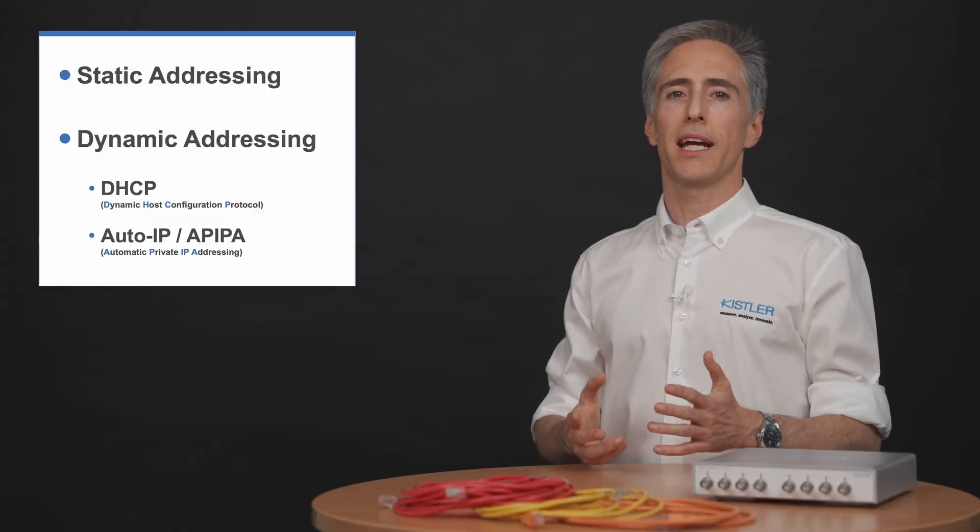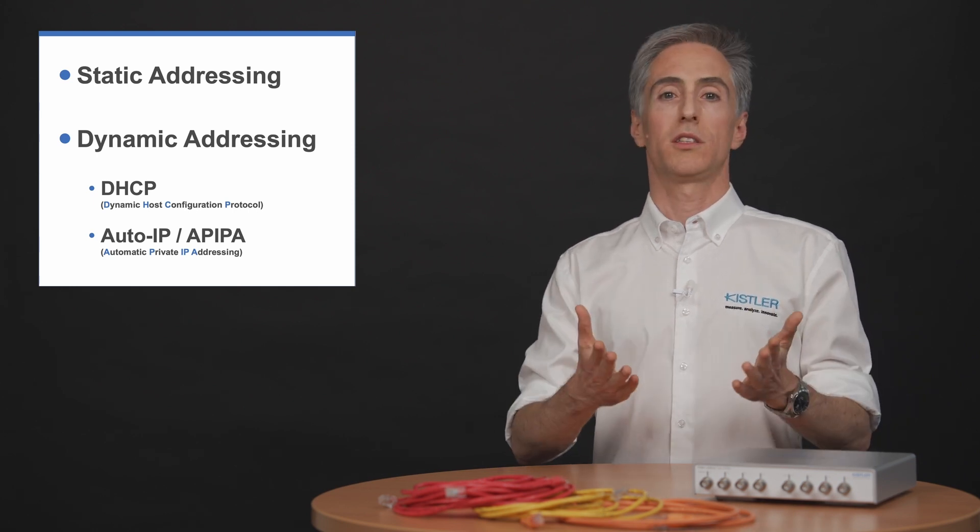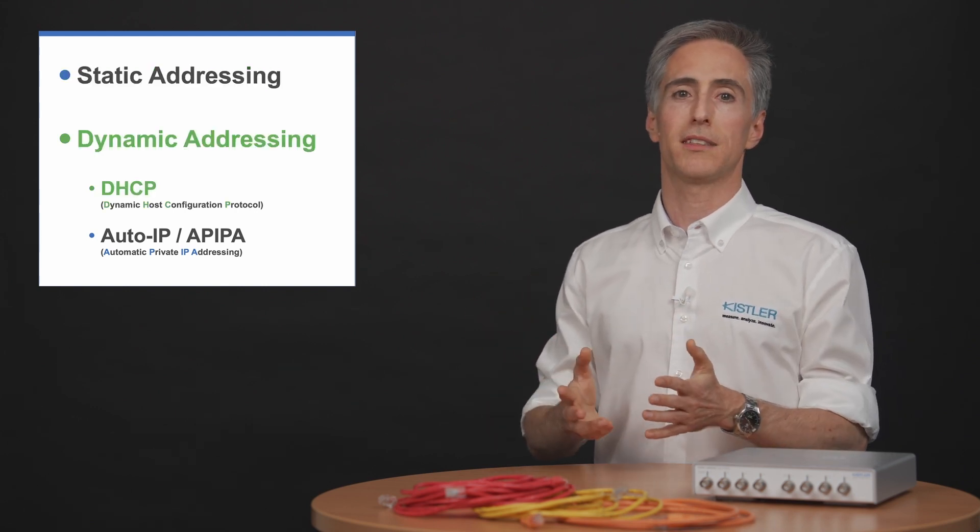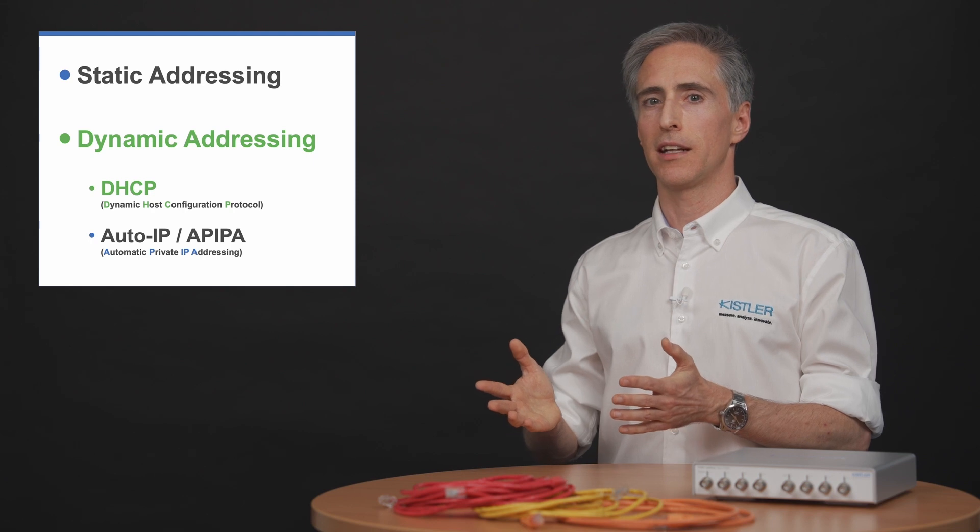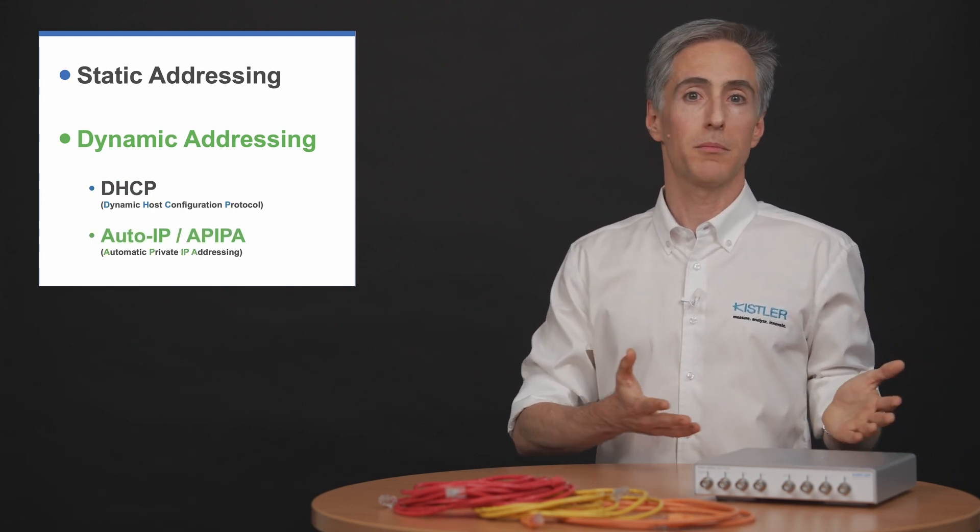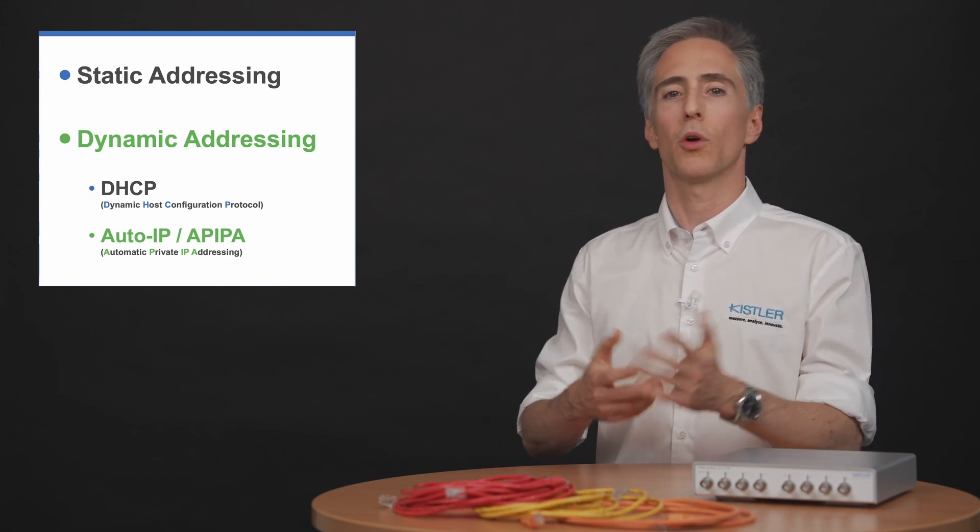There are basically three ways how devices can get an IP address. Someone gives them specific static addresses, a so-called DHCP server provides IP addresses to new devices in the network, or devices just pick an IP address themselves if there is no DHCP server. This is then called auto IP.